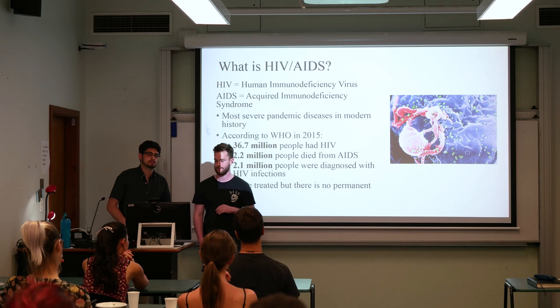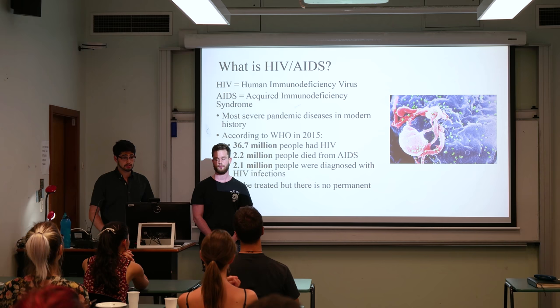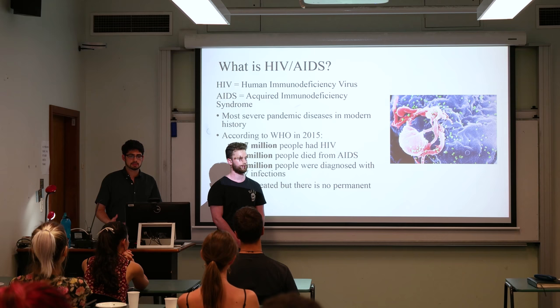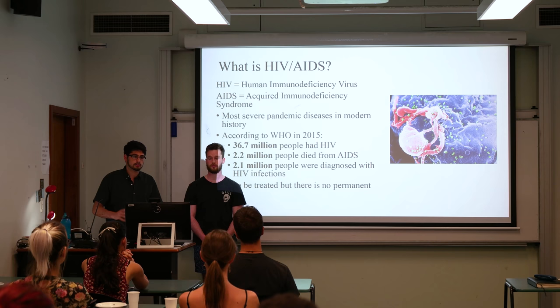So what is HIV and AIDS? As most of you probably know, HIV stands for Human Immunodeficiency Virus which eventually develops into AIDS, which is Acquired Immunodeficiency Syndrome. This is where a patient's immune system is compromised and they can quite easily die from normal illnesses such as the common cold. This has been called the most severe pandemic disease in modern history.